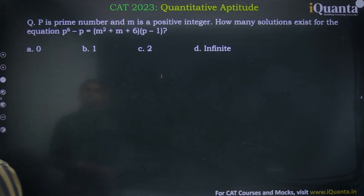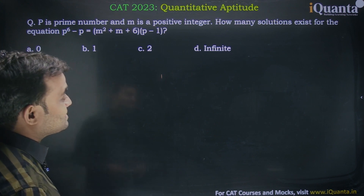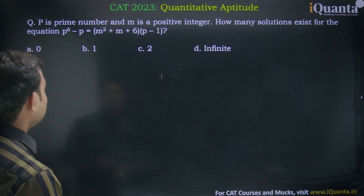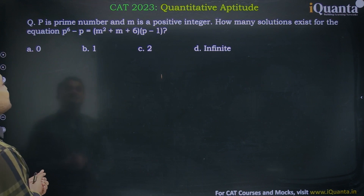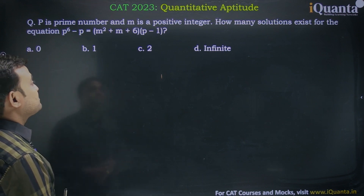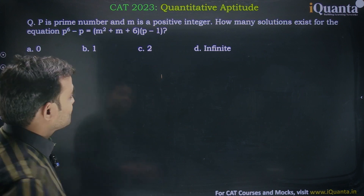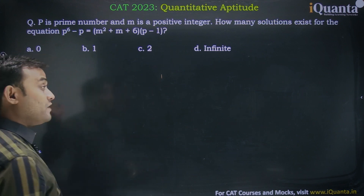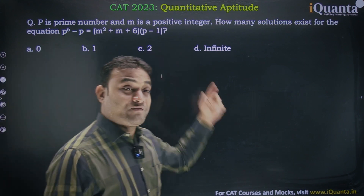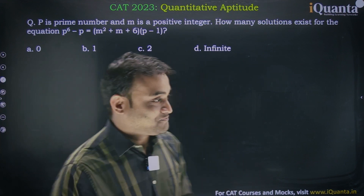It says p is a prime number and m is a positive integer. How many solutions exist for the equation? p to the power 6 minus p is equal to m squared plus m plus 6 into (p minus 1). The options are 0, 1, 2, and infinite — which makes it more interesting.